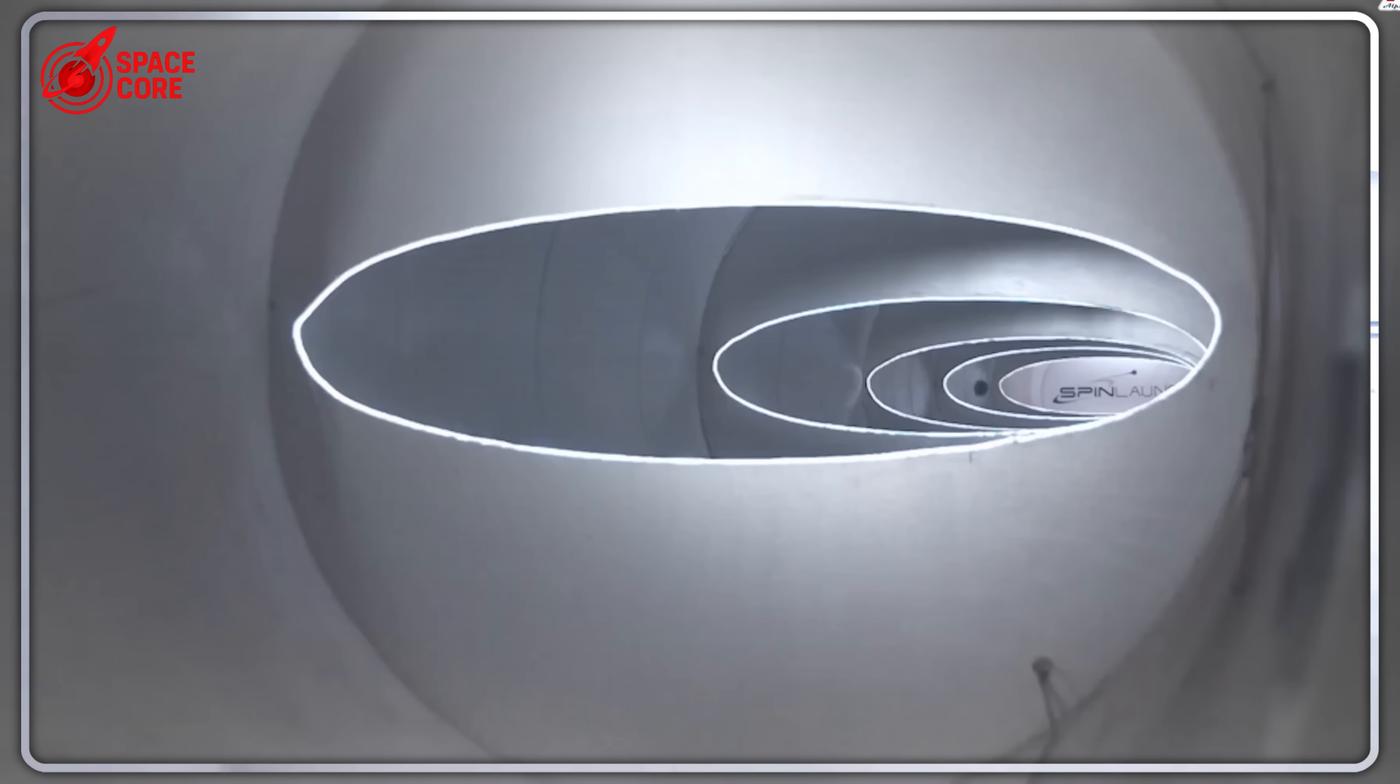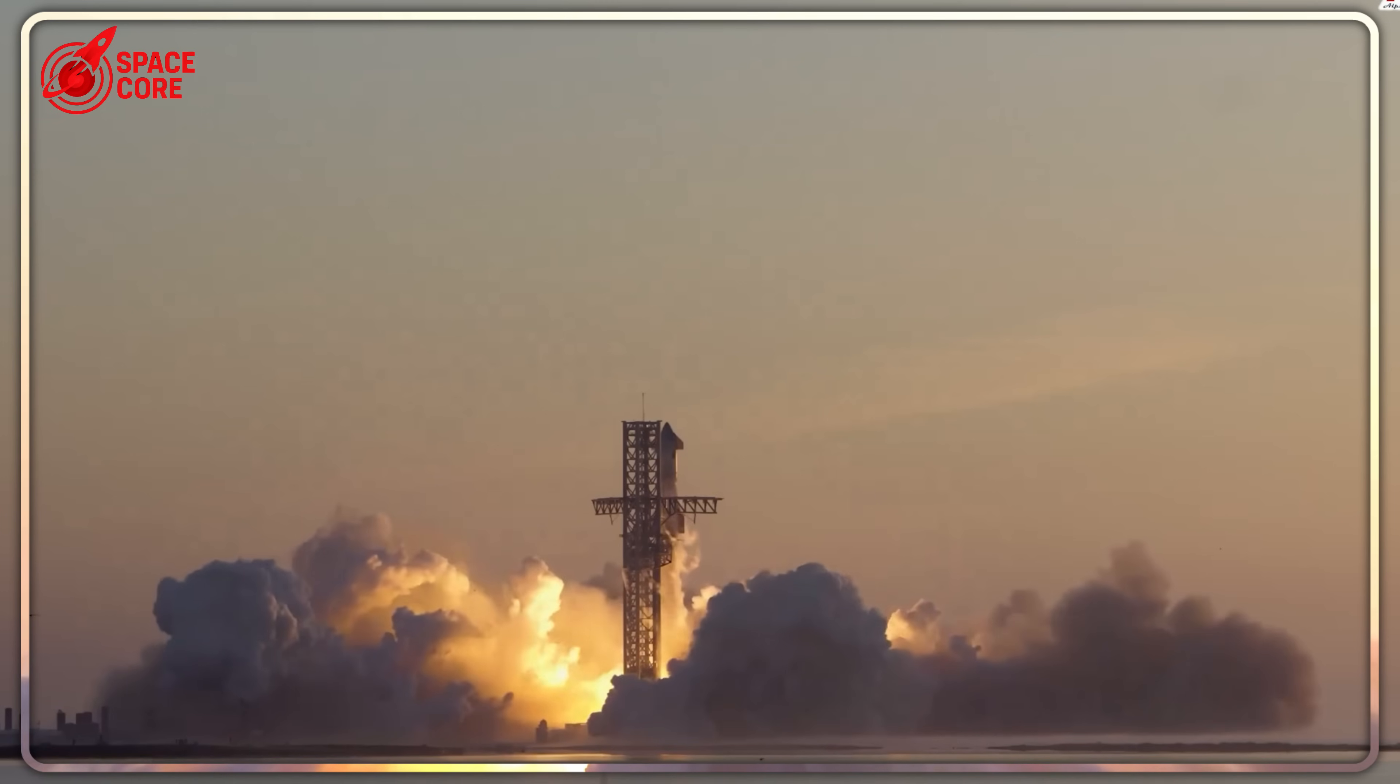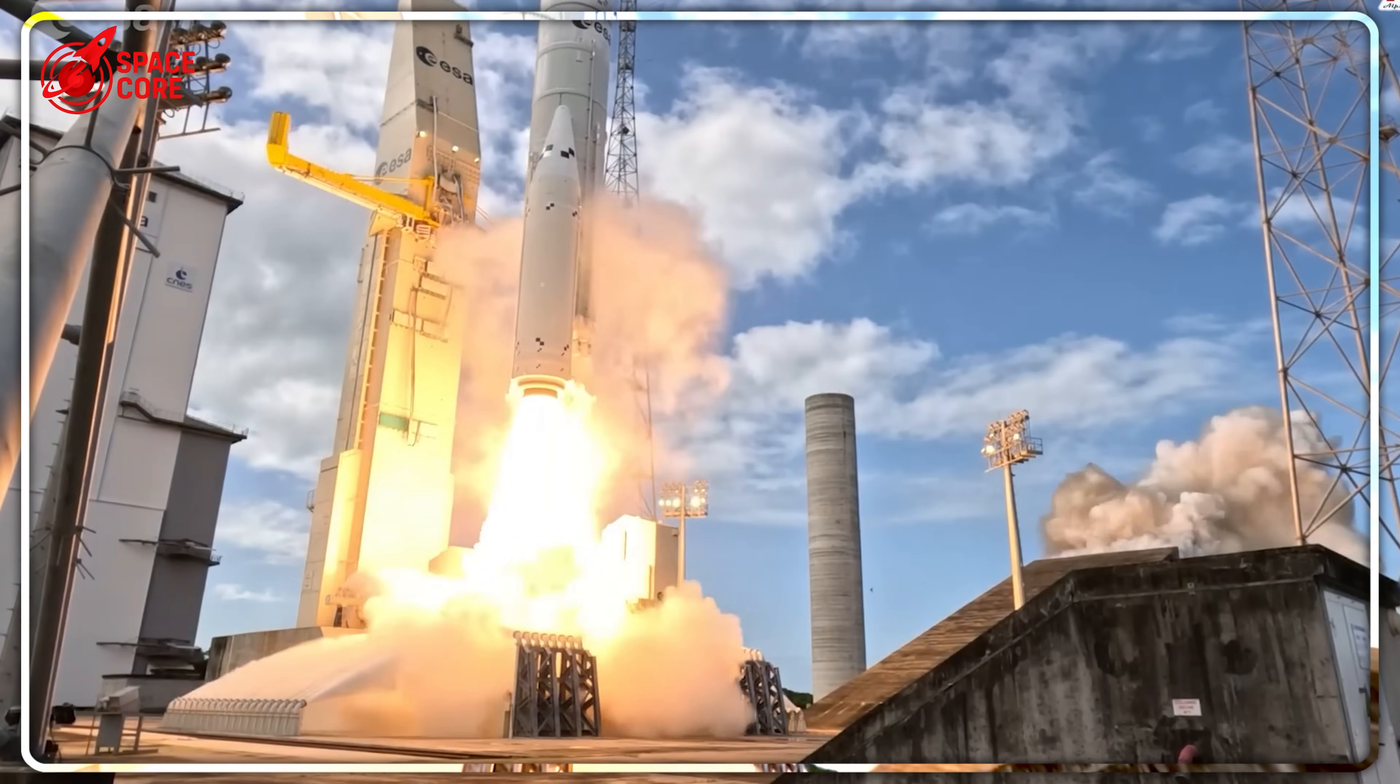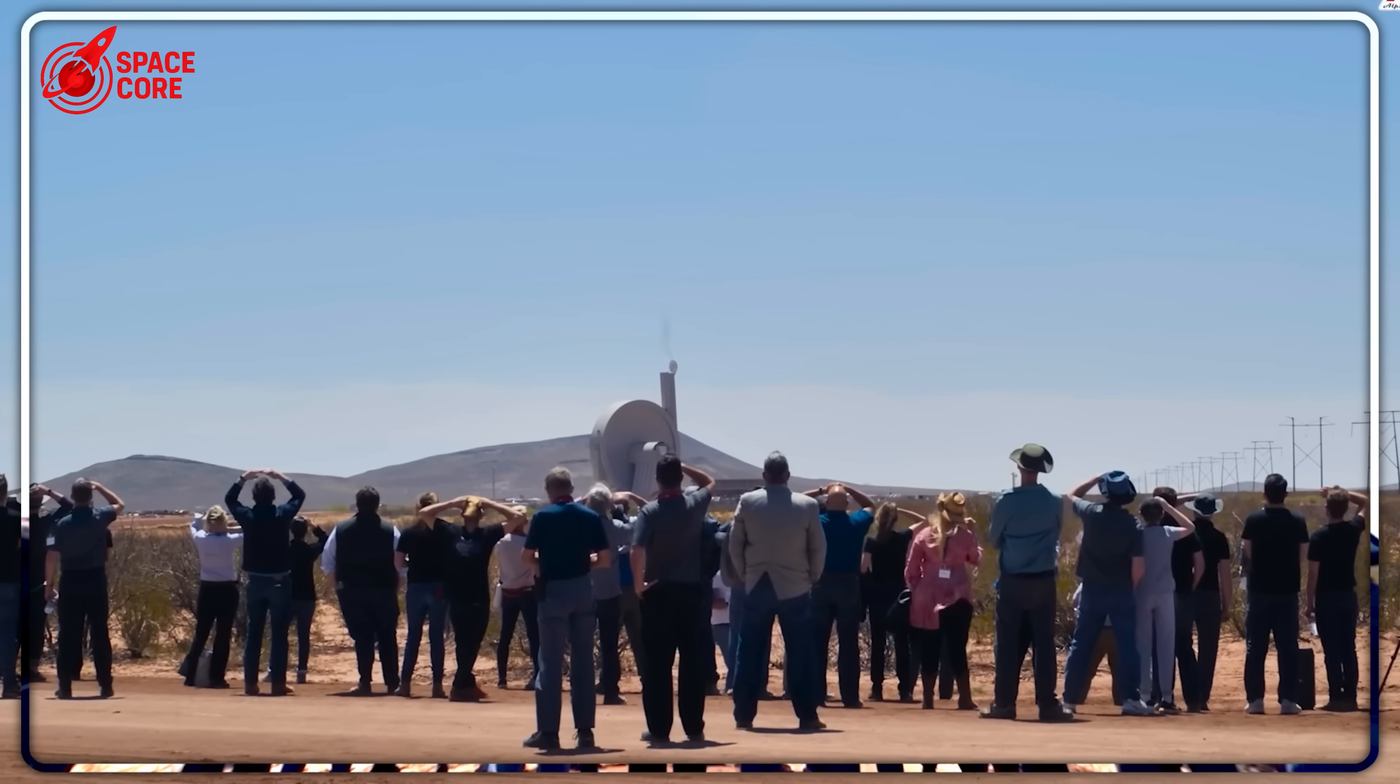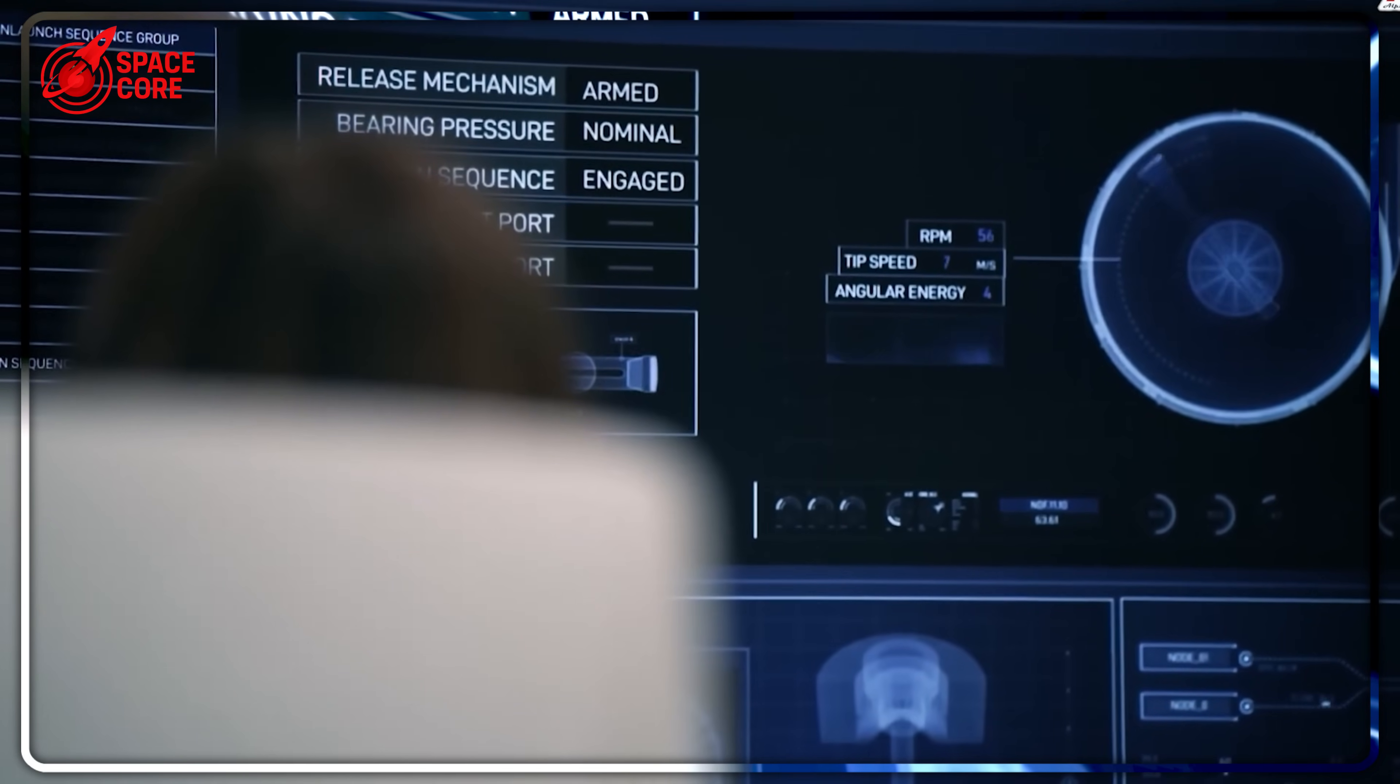NASA's September 2022 Flight Test 10 proved something extraordinary. Their data acquisition units survived 10,000 g-forces. To put that in perspective, a 1-kilogram smartphone would feel like a 10-ton truck crushing down on it. Fighter pilots black out at just 9 g's. This was over 1,000 times more intense. And here's what's truly remarkable: this suborbital accelerator was just the prototype. The planned orbital version would be 100 meters wide, nearly the length of a football field, theoretically launching objects at 18,000 to 20,000 miles per hour. That's genuinely fast enough to reach orbit.